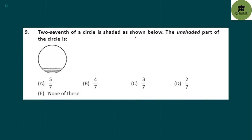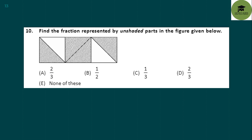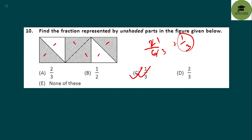2/7 of a circle is shaded. The unshaded part of the circle is: total is 1, 2/7 is shaded, so unshaded part is 1 minus 2/7, which equals 5/7. Option A is your correct answer. Next: Find the fraction represented by the unshaded part of the given figure. There are 6 total parts and 2 are unshaded, so 2/6 reduces to 1/3. Option C is your correct answer.